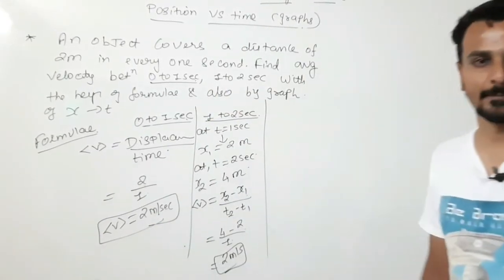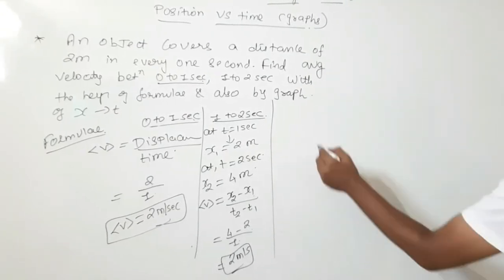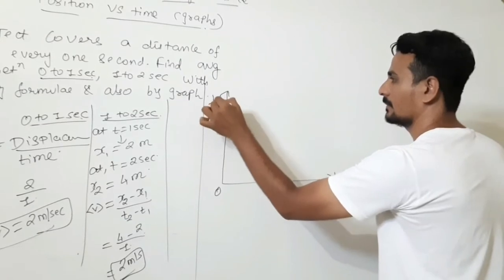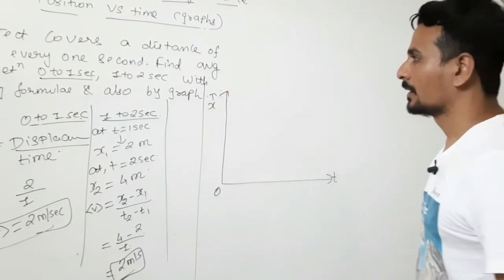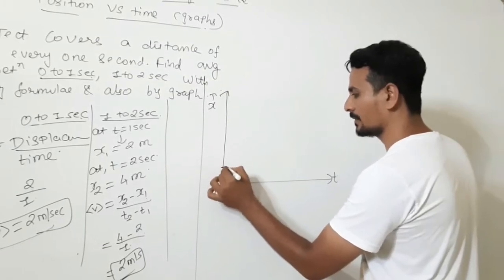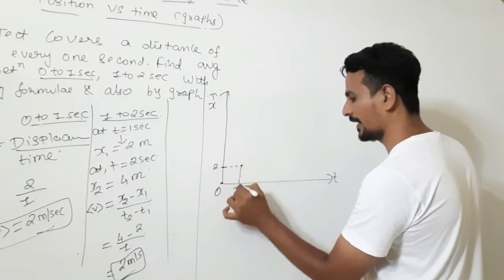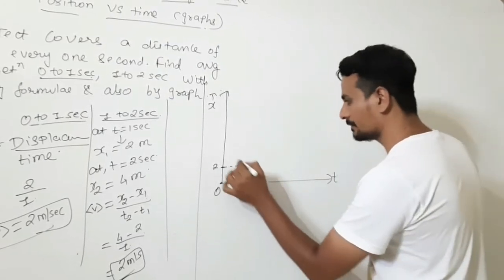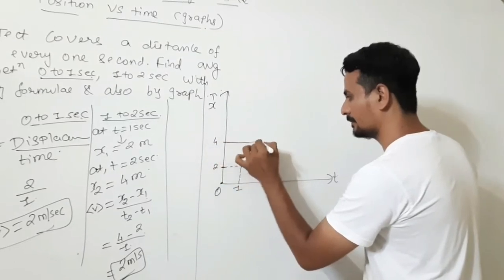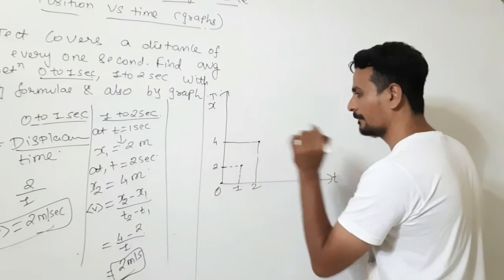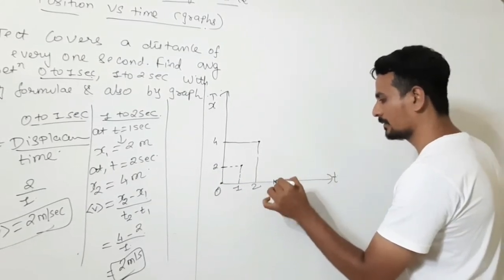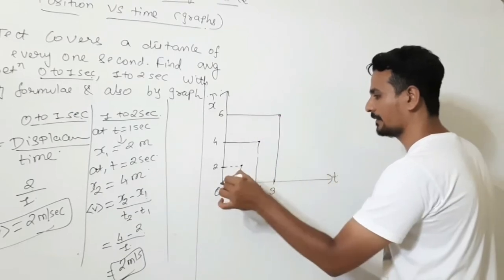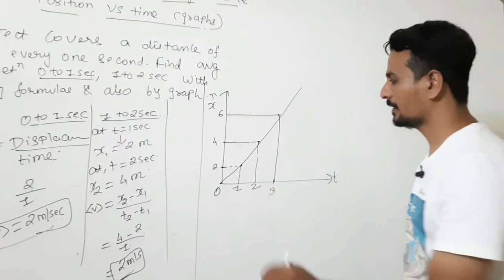Now let us discuss the same concept with the help of an x vs t graph. The object covers a distance of 2 meters in 1 second. At 2 seconds it is at 2 meters, at 3 seconds it is at 4 meters, at the next second it is at 6 meters. Join these points. The graph is a straight line. This is how the graph looks.